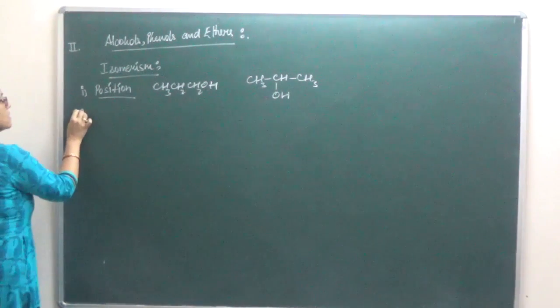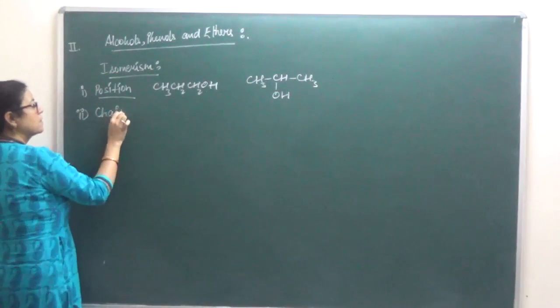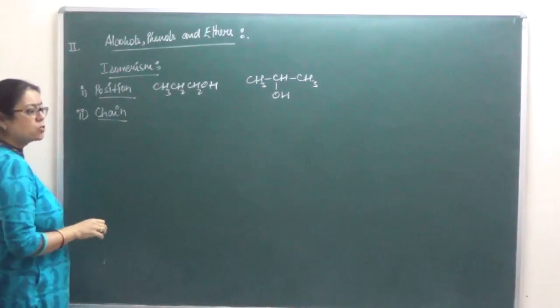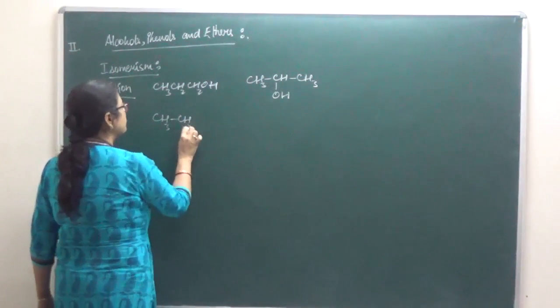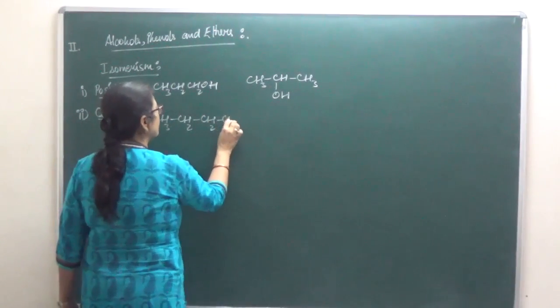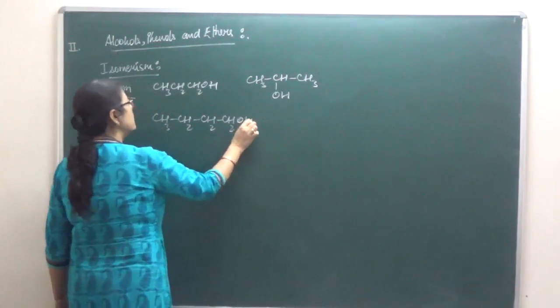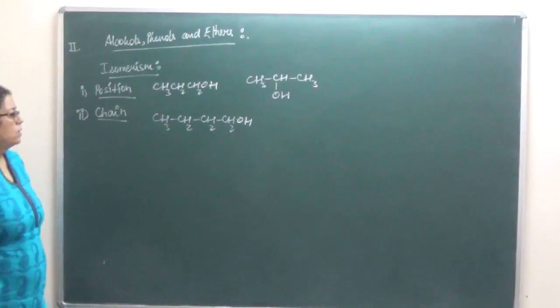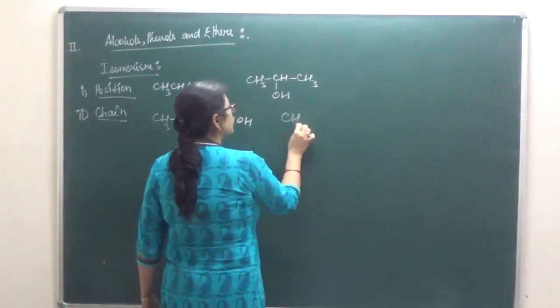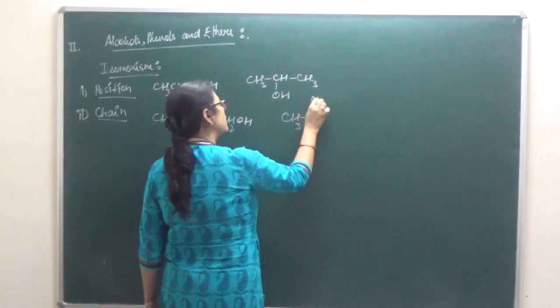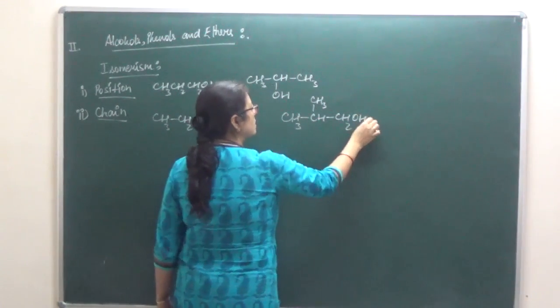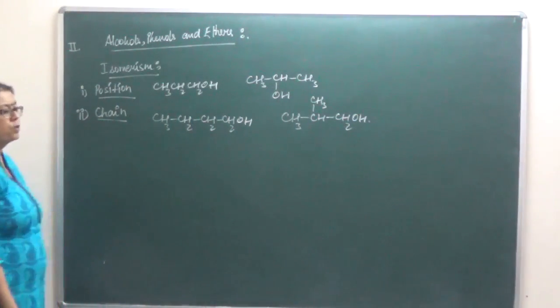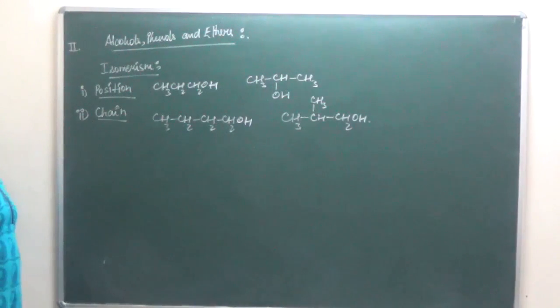Second is chain isomerism, where chain is going to be different. For example, this is butanol. Chain isomerism would be 2-methylpropanol.